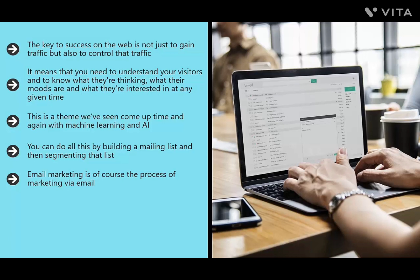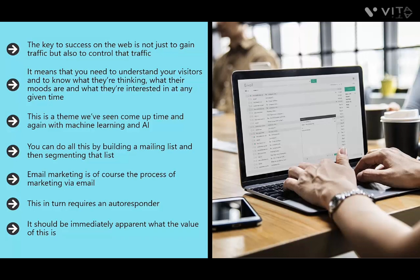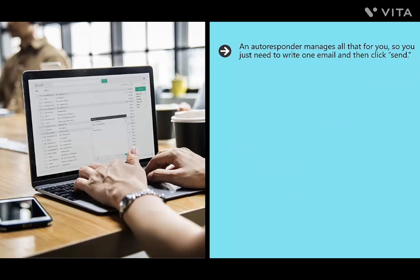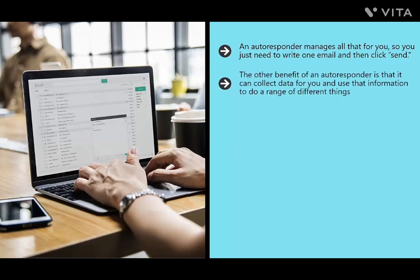Email marketing is the process of marketing via email — building a big list by asking visitors to your site to share their contact details. This requires an autoresponder: a tool used to create email forms and manage all contacts on your list. Sending emails manually using Gmail is not practical for large lists, and you'd need to manually manage subscribe and unsubscribe requests. An autoresponder manages all of that for you. It can also collect data and show you the percentage of subscribers who actually open your emails, enabling you to identify problems and work on solutions.